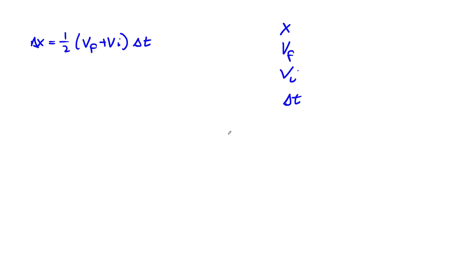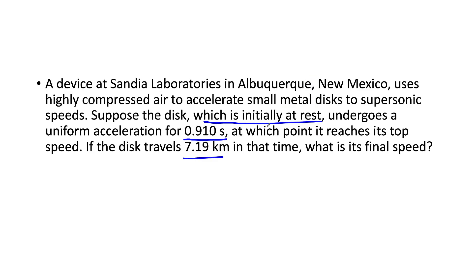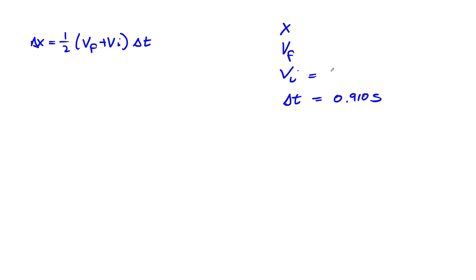We're going to assume initially at rest, when we start time is zero and we continue for 0.9 seconds. So our change in time is 0.910 seconds. Now we already talked about what initial velocity is. This is our initial velocity at rest, so this is zero meters per second.